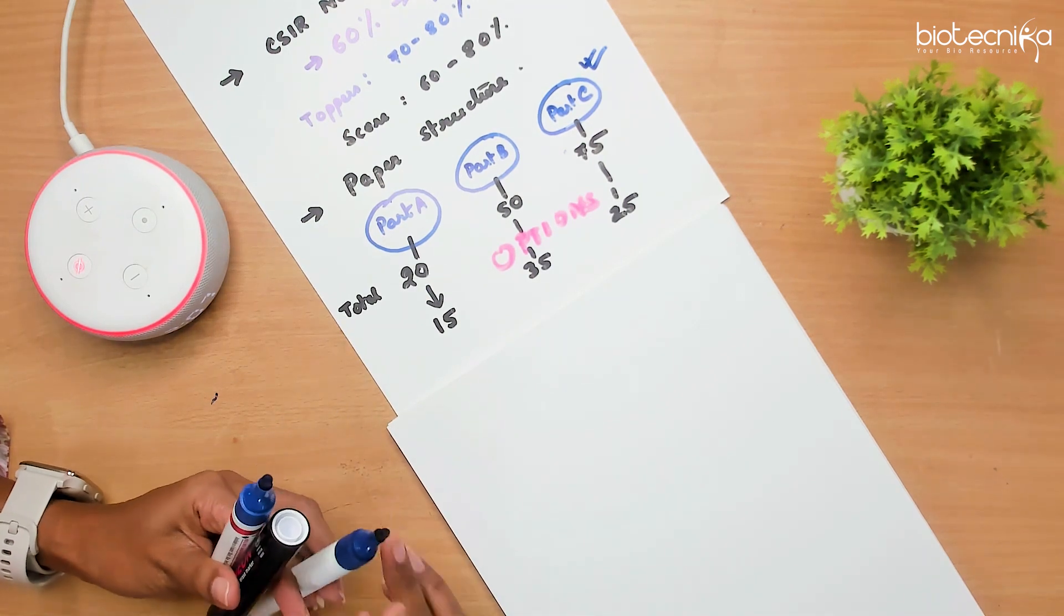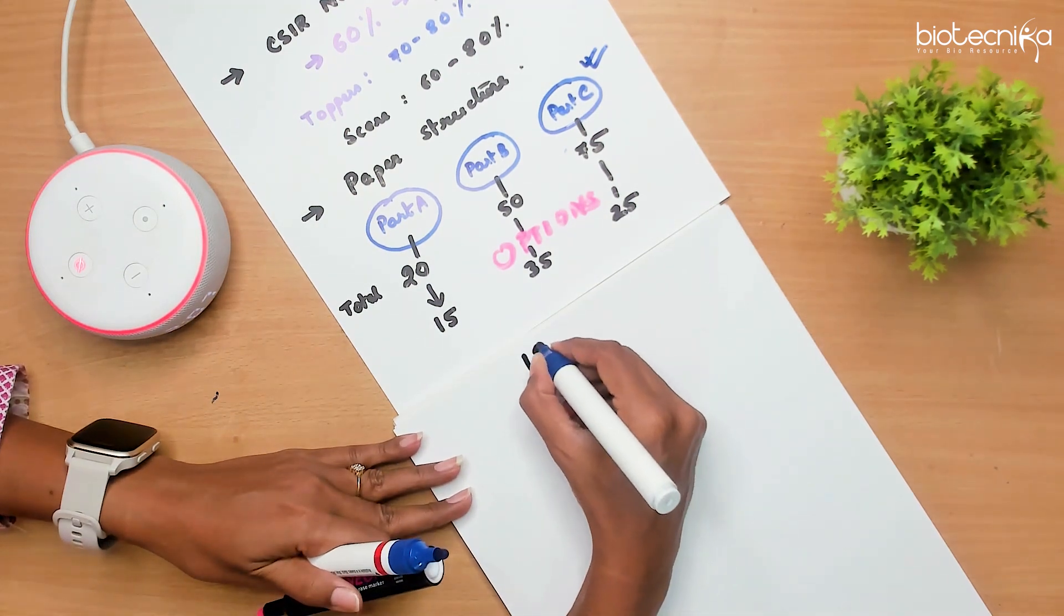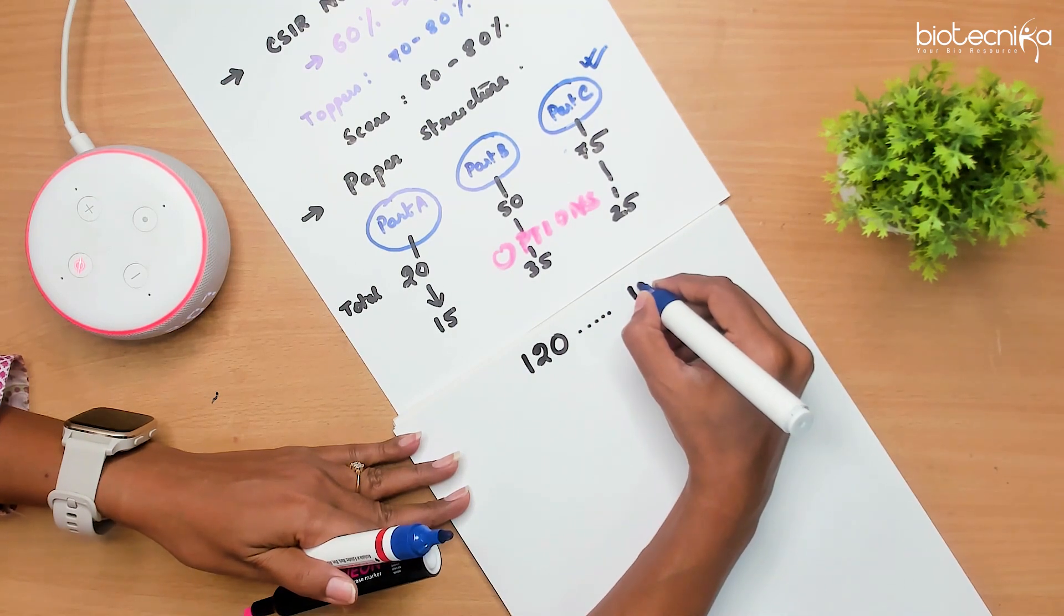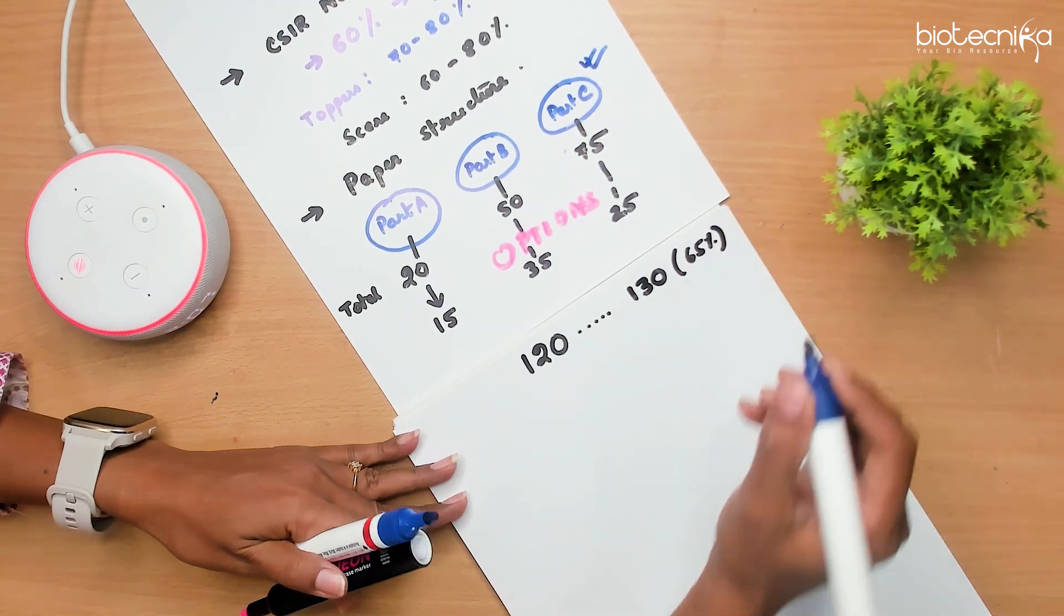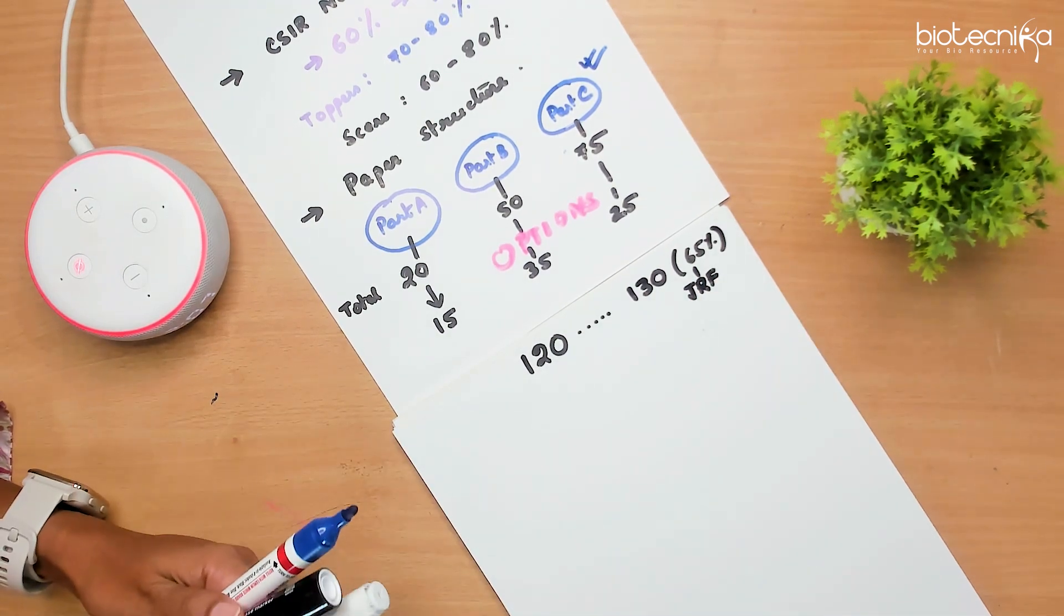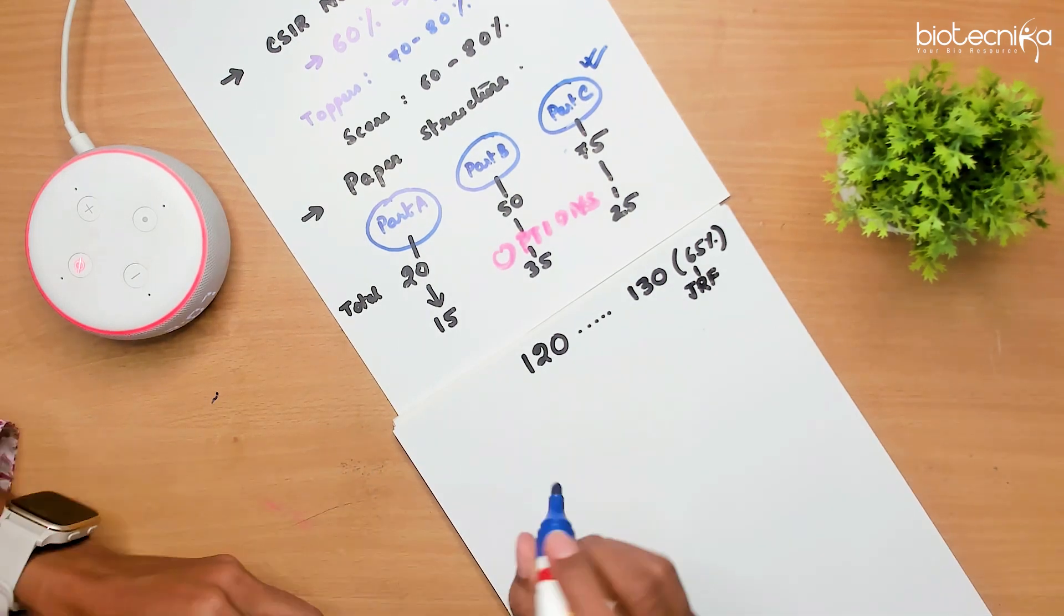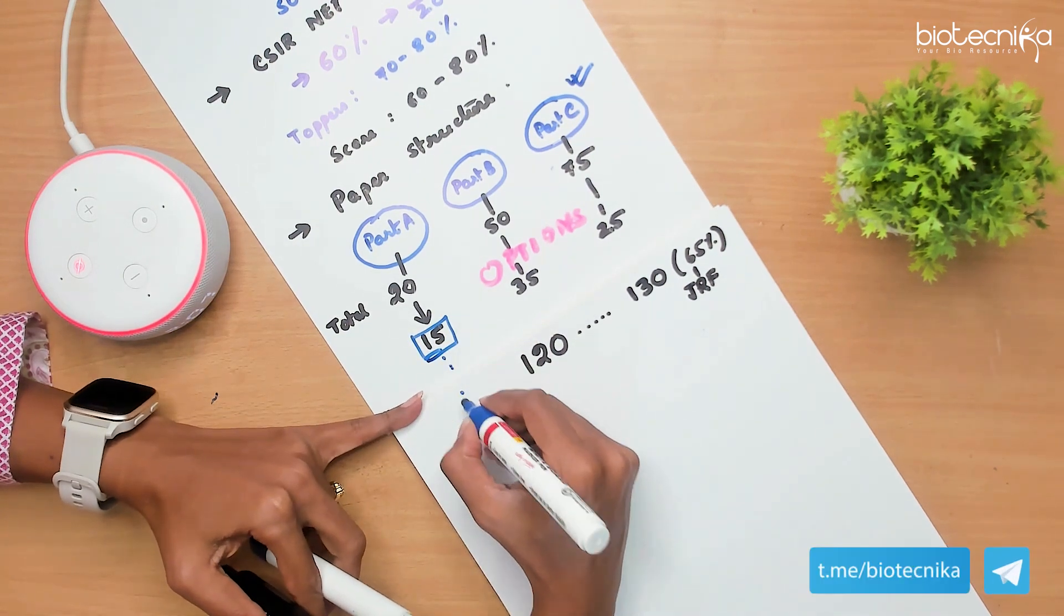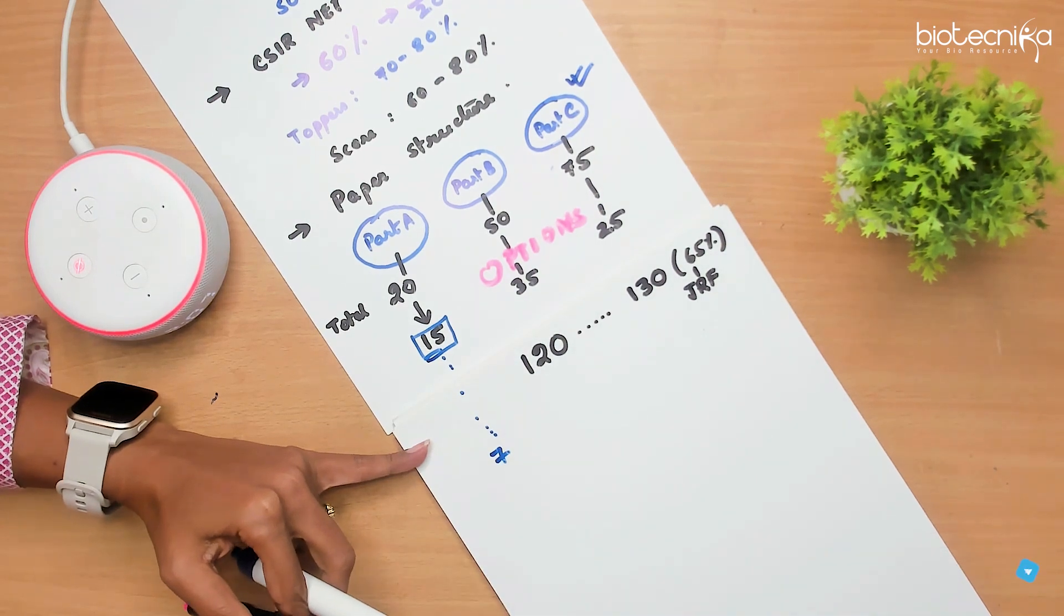Now, what is our target that we need to score? We need to score that 120 marks. Just for little bit of consideration, I will consider around 130 marks, which will be 65 percent. That will at least guarantee you nothing but JRF. If not the rank and the top part, but at least you will get the JRF. Now, for that, out of 15 questions, as I mentioned, you have to solve total 15 questions in Part A. No need to solve 15 questions. You can just solve 7 questions.